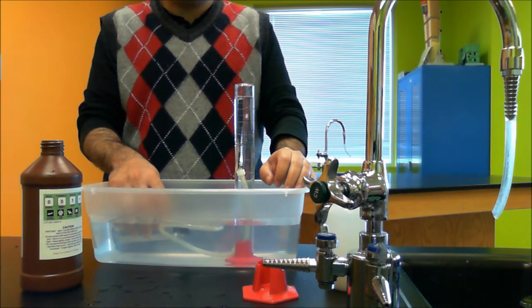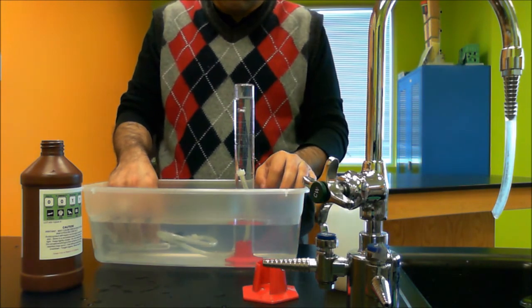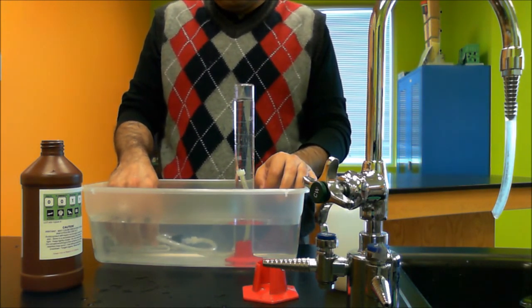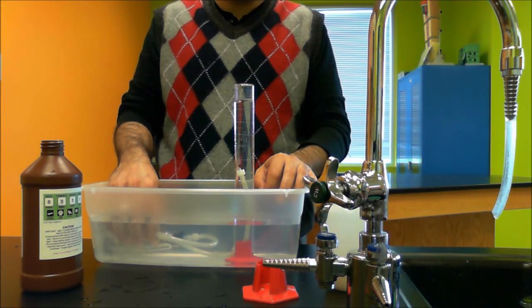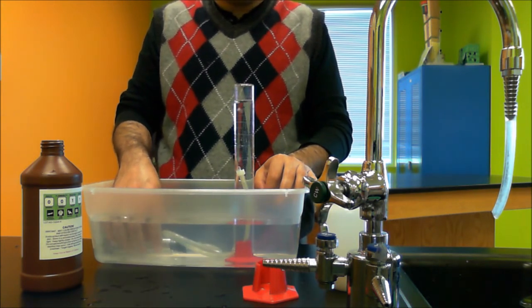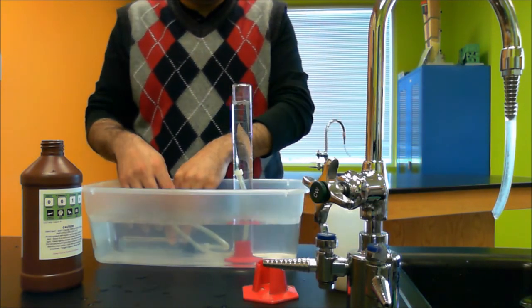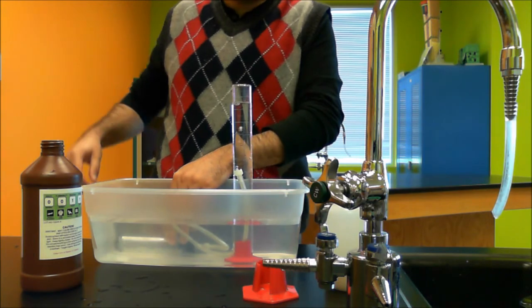And record your observations on your data table. Now, there's something wrong, but we need a control in this experiment. And we're going to discuss what we can do as a control when we're doing the lab. I mean, before doing the lab. So, that's it. Thank you for watching.